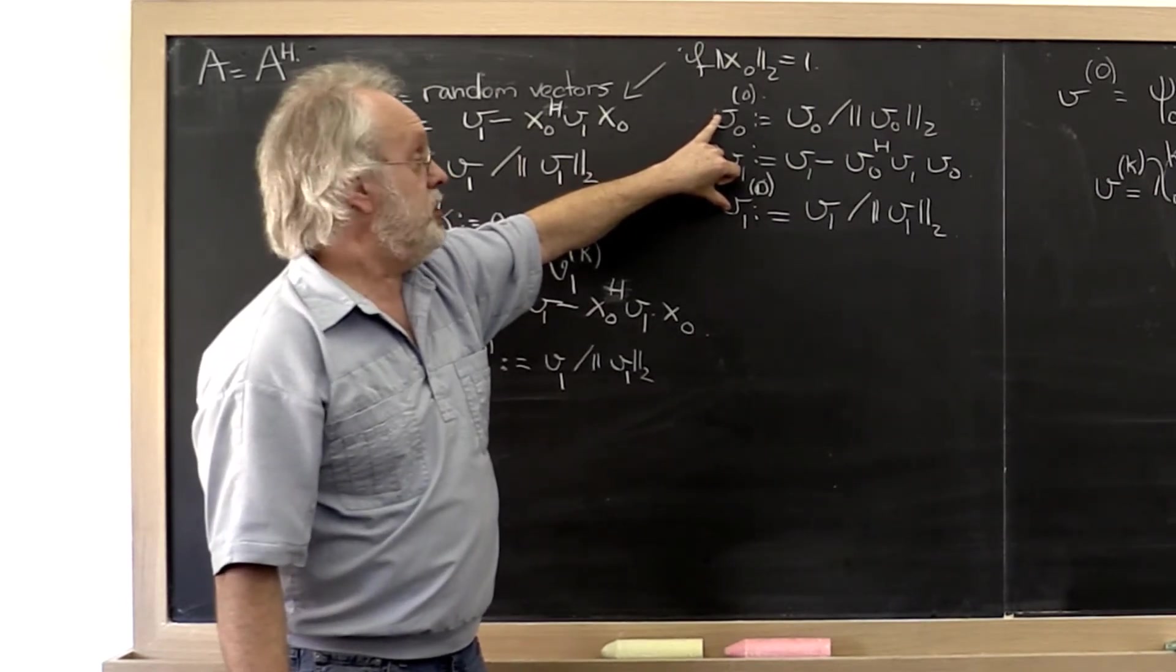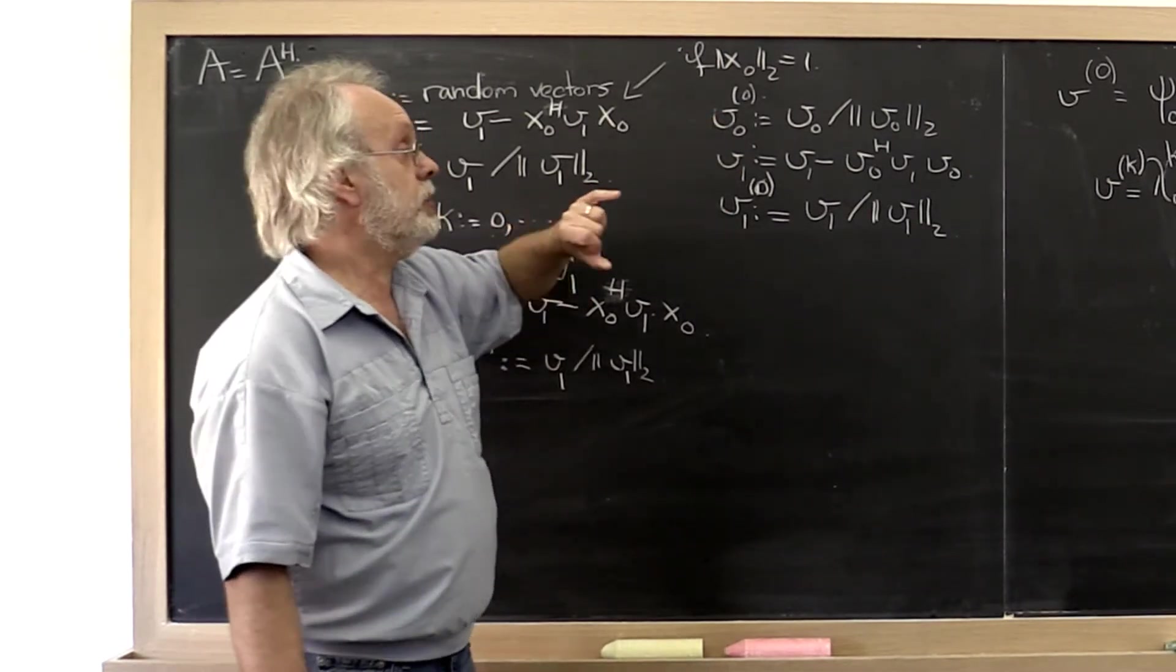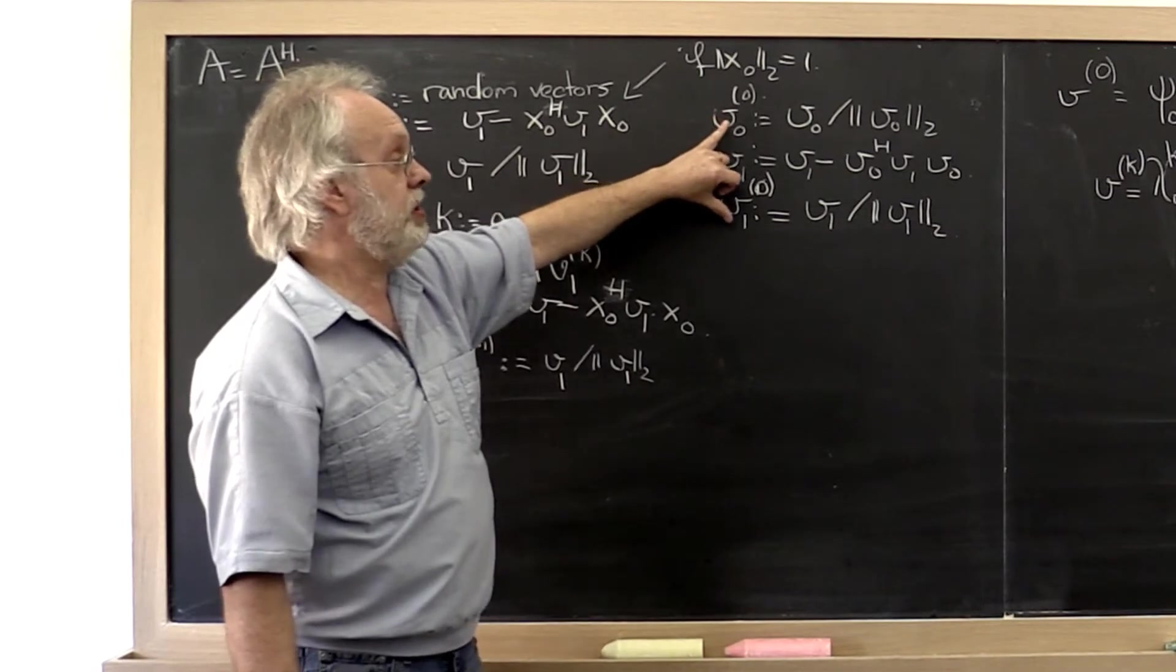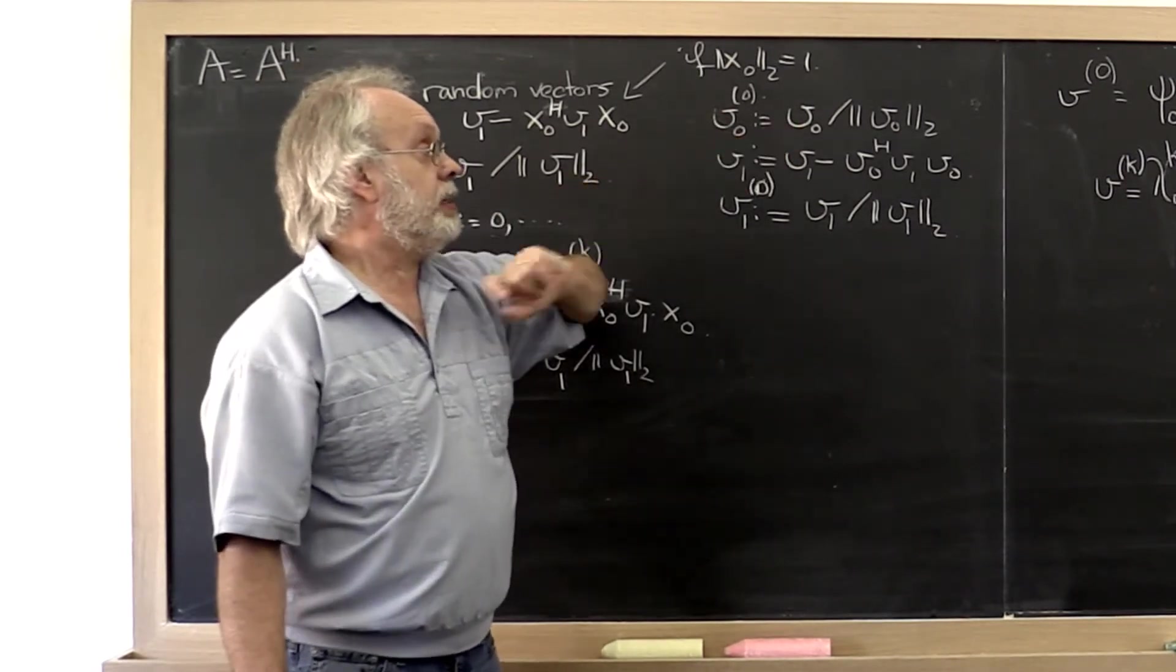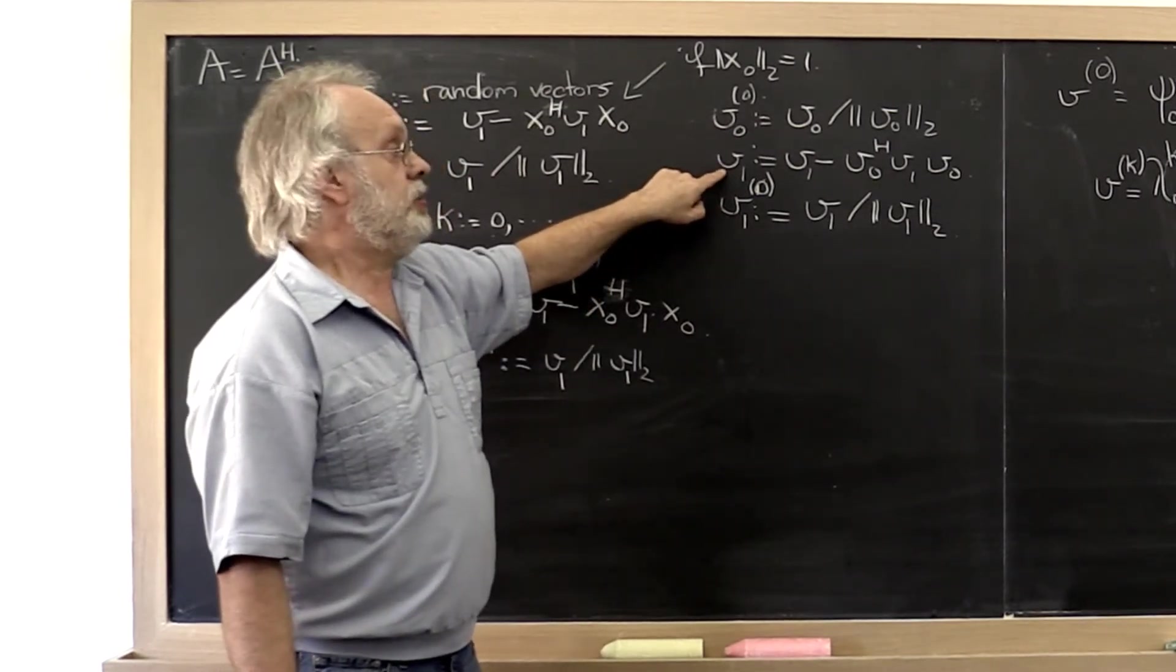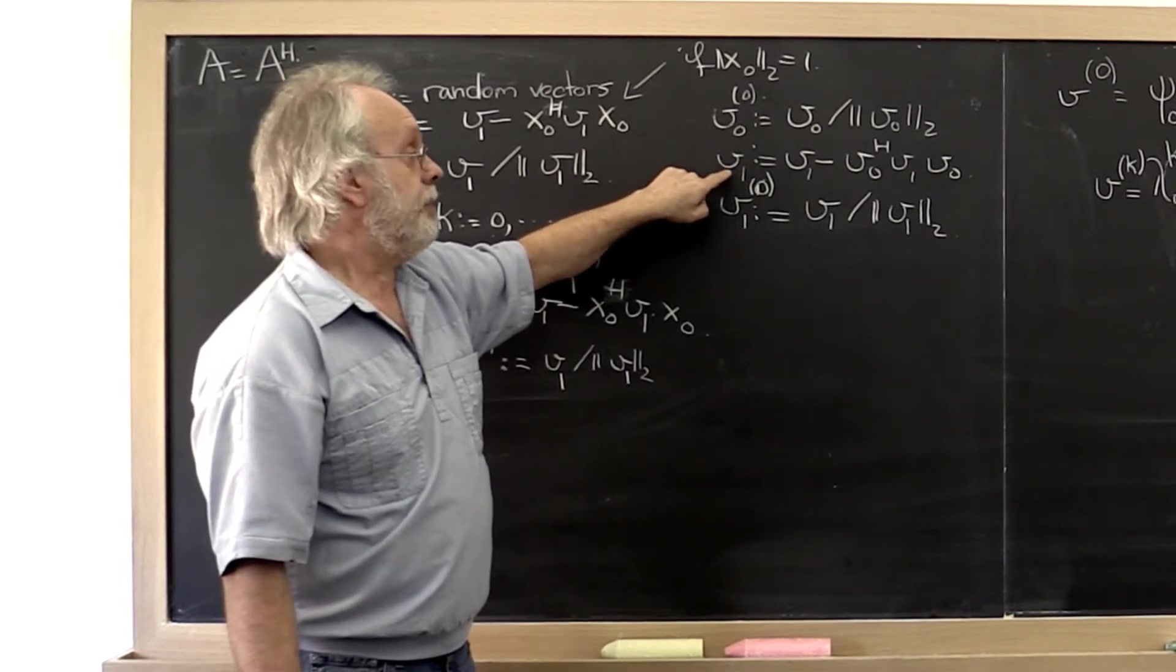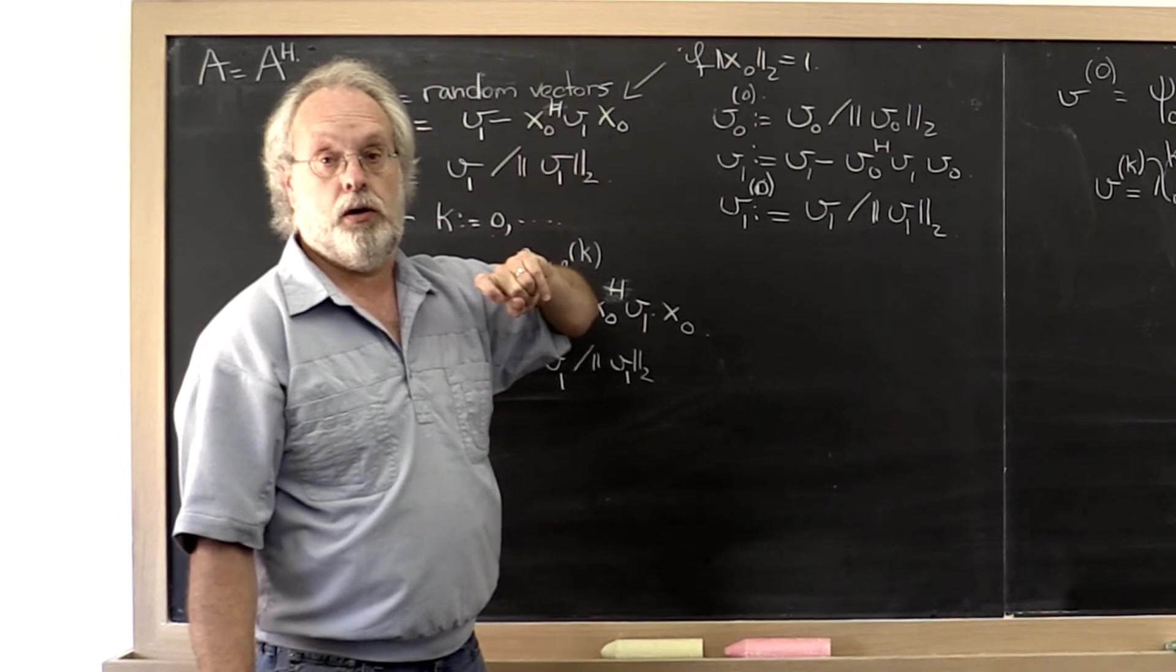What did we do? We said compute its QR factorization. And one way to compute its QR factorization is to say, take the first column and make it of length 1, then subtract out the component in the direction of that vector from the second vector and normalize it to be 1.